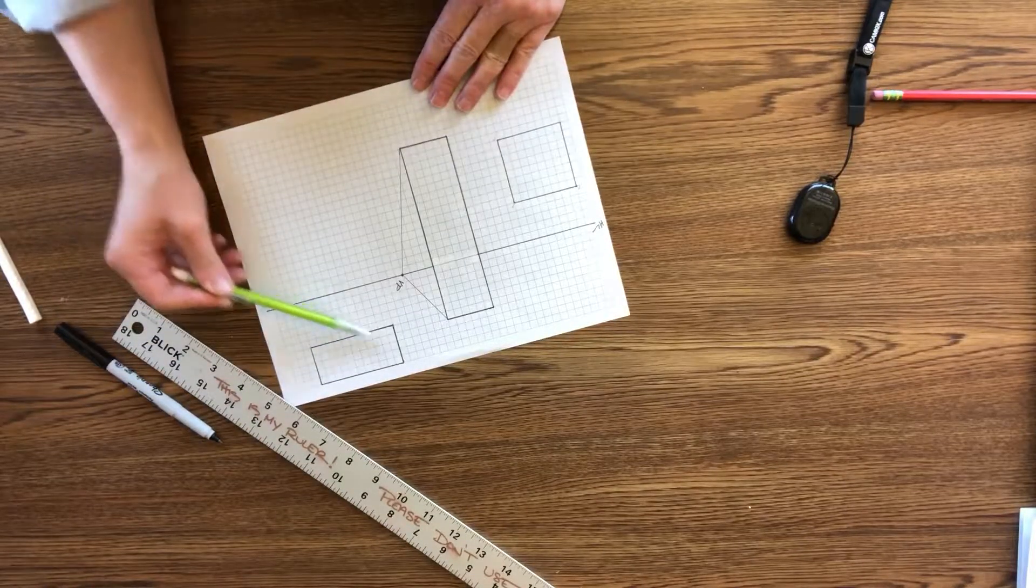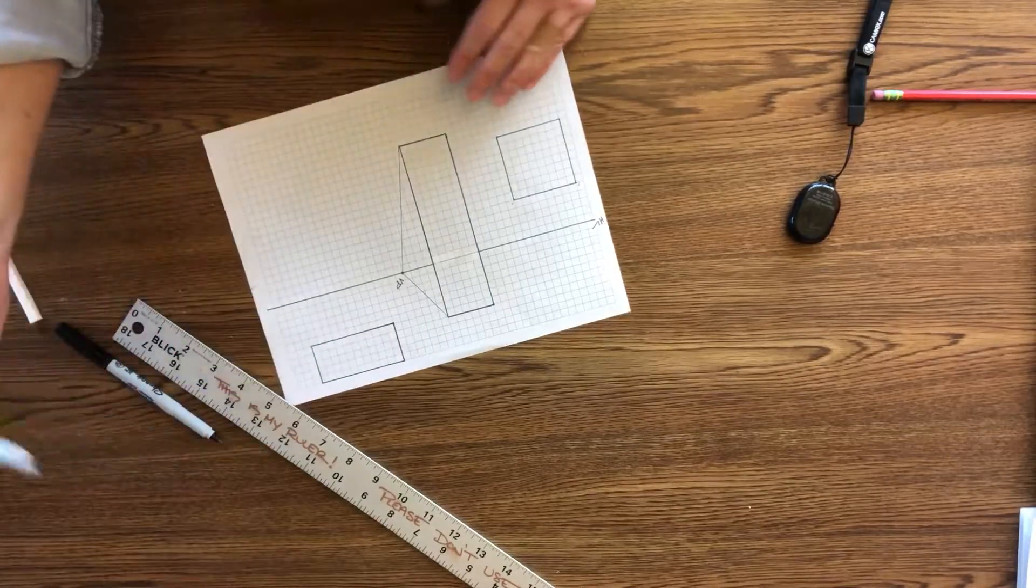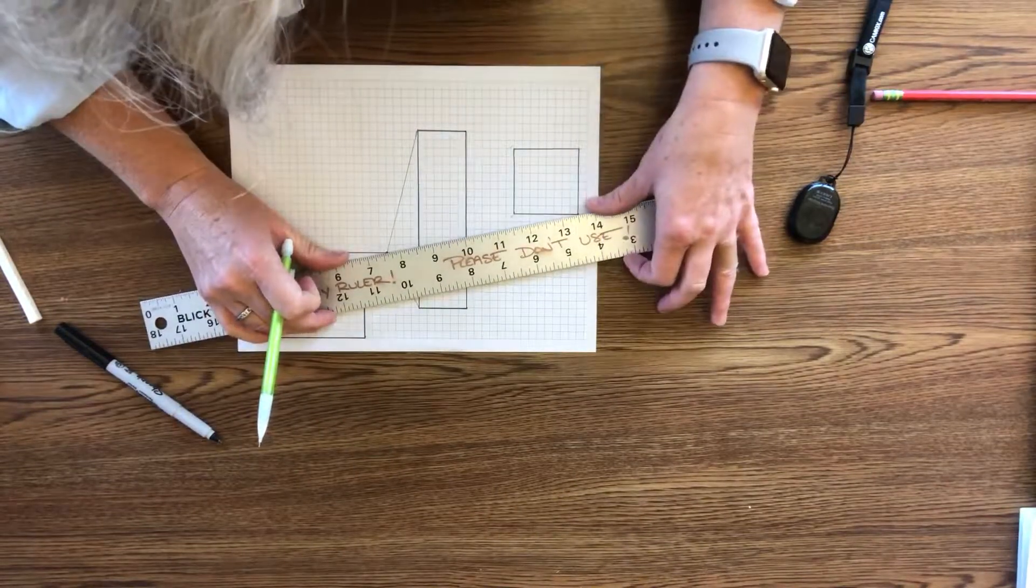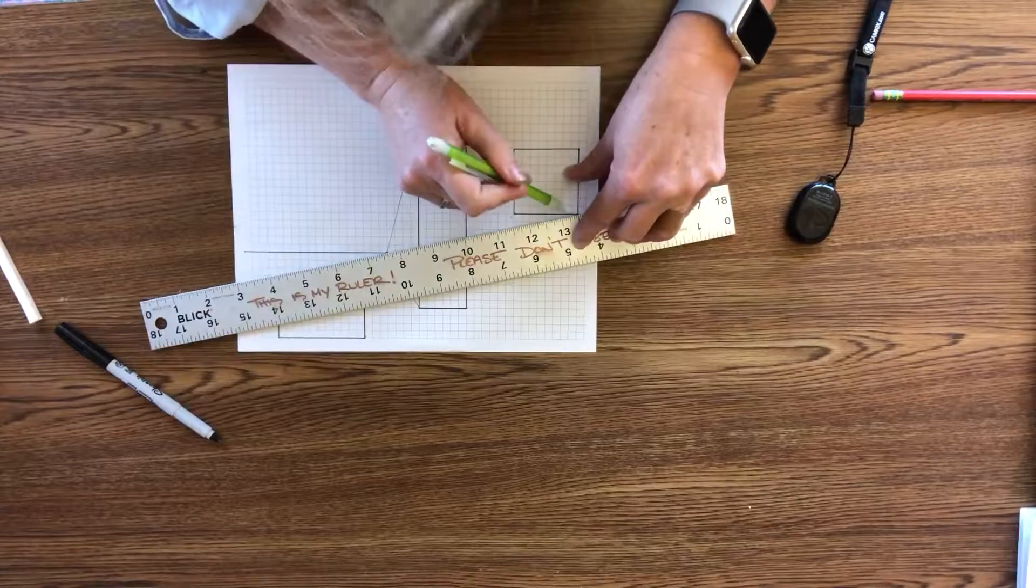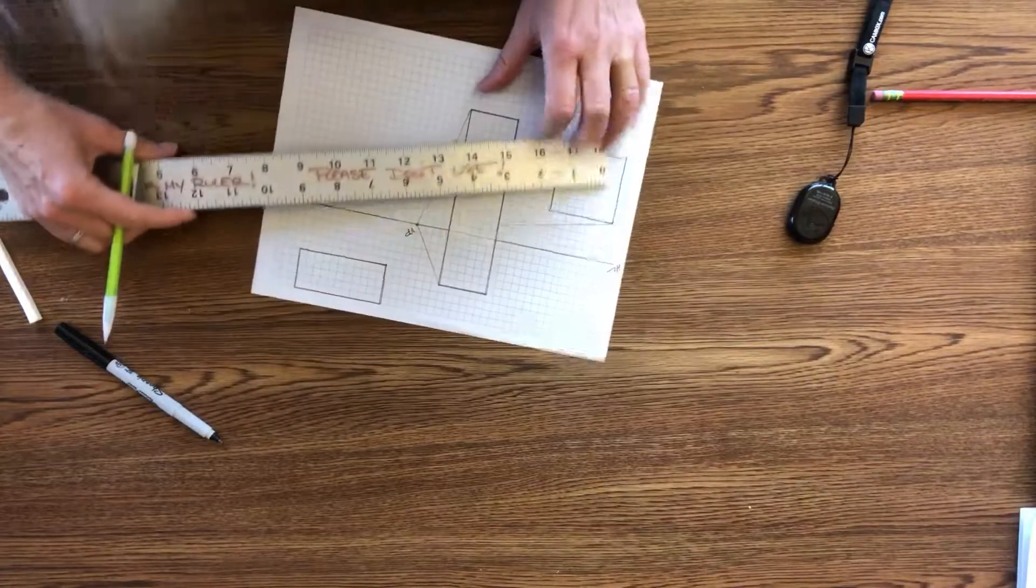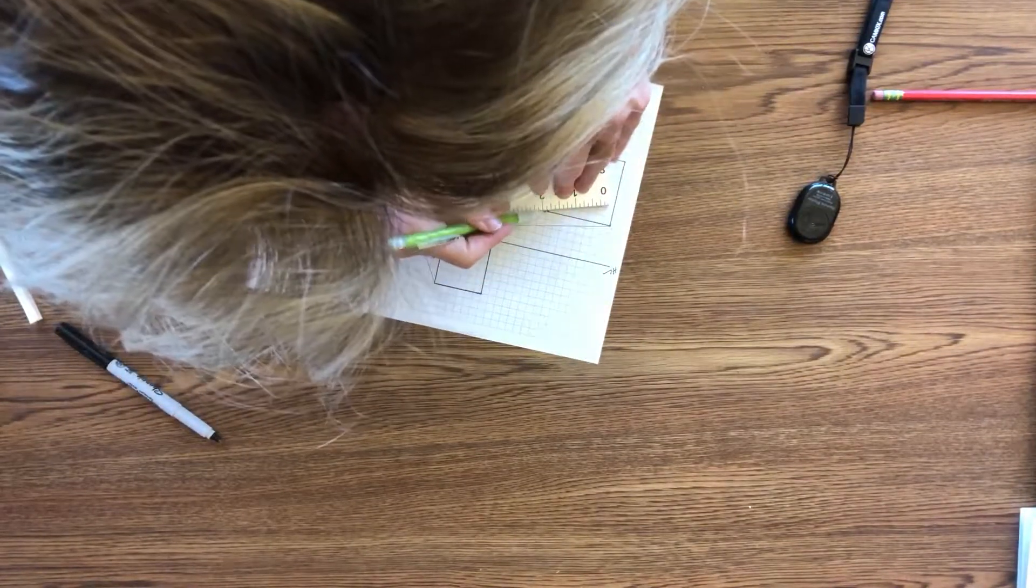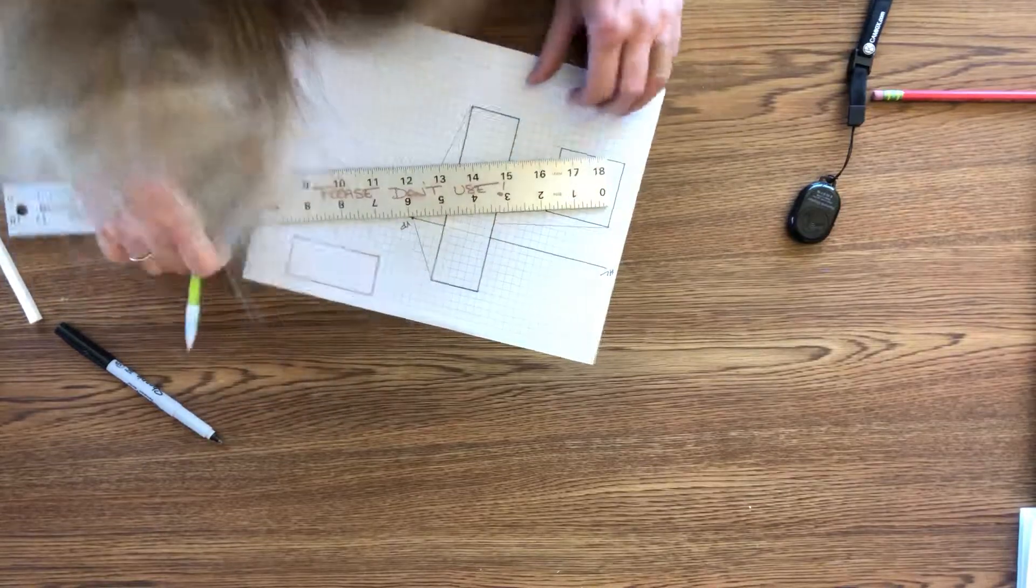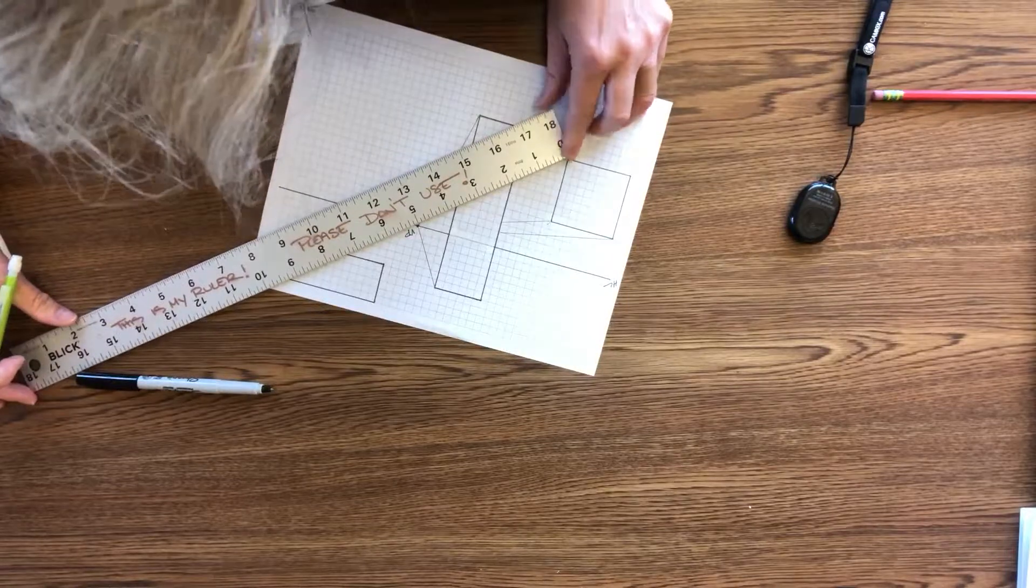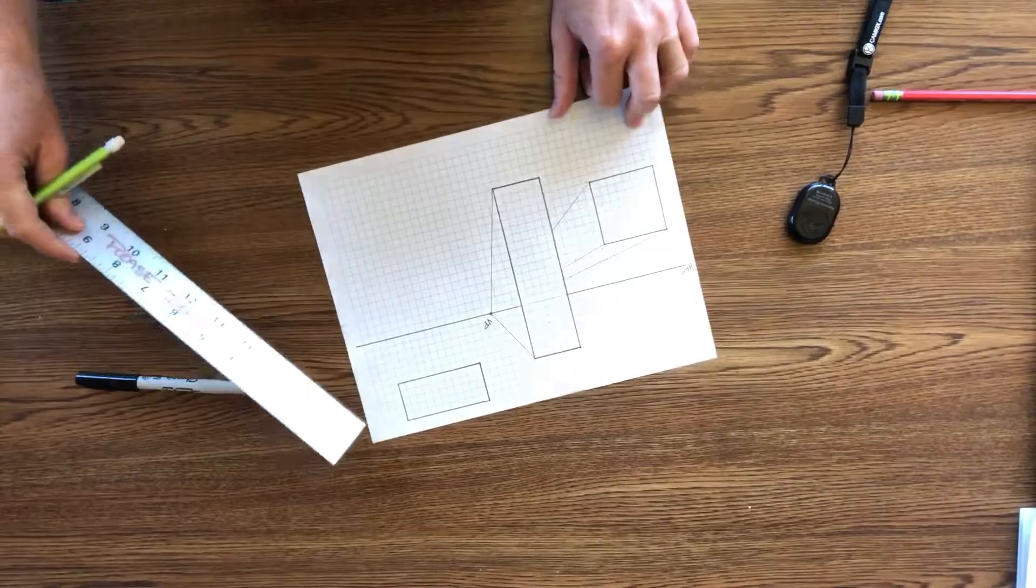Alright, so from here I'm going to connect these two and I'm just going to go back towards there, stop at that building, come to this point again, stop at this building, and from this point bring my ruler around and stop.